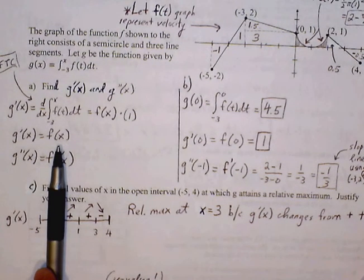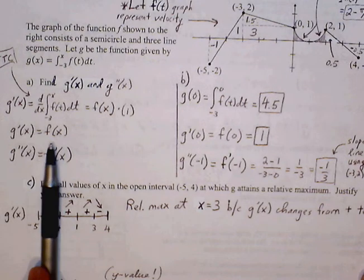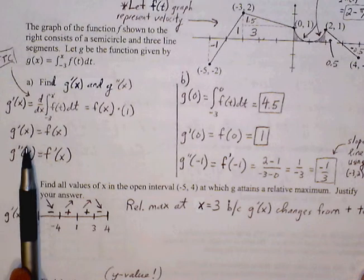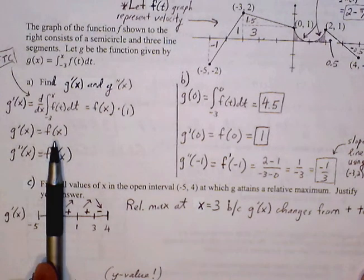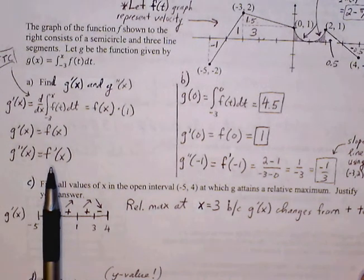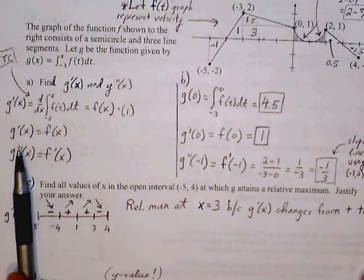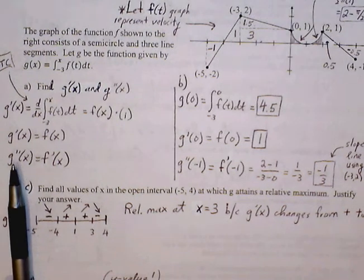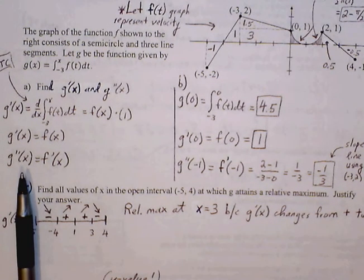For g double prime of x, we take the derivative of g prime. So g prime turns into g double prime, and f of x turns into f prime of x. So we have g of x, g prime, and g double prime all defined, and we'll come back to these when we need them.